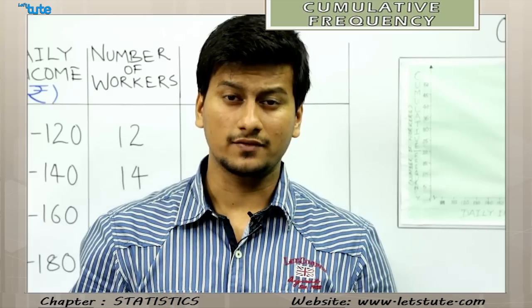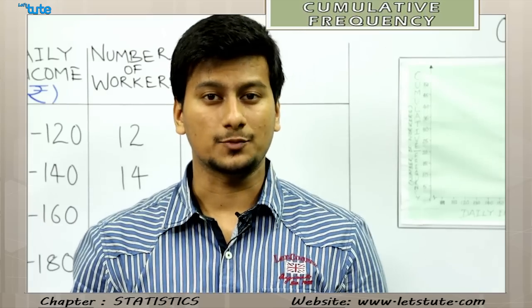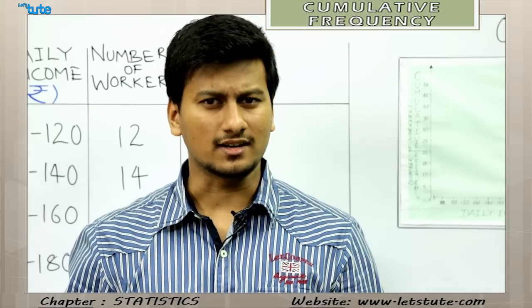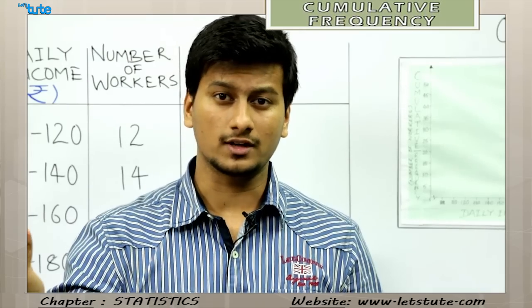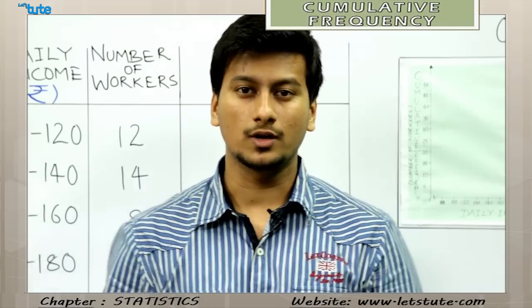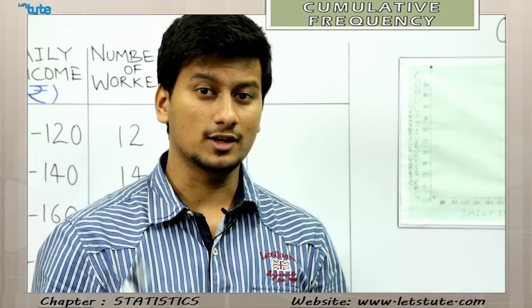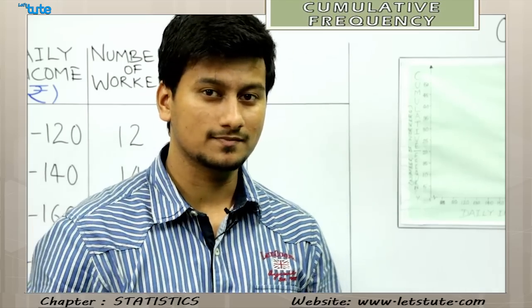An ogive is of two types: less than type and more than type. Today we will talk about specifically the more than type.